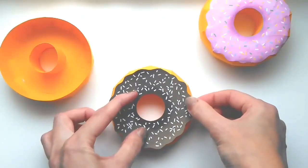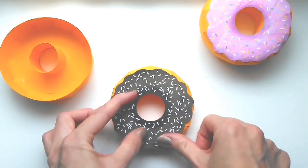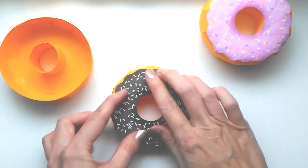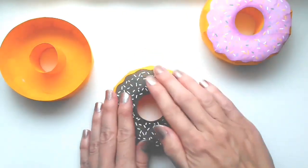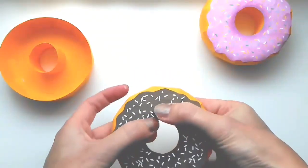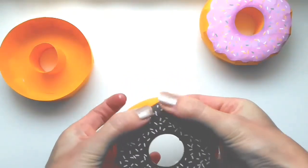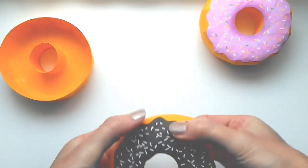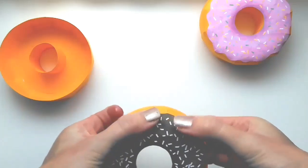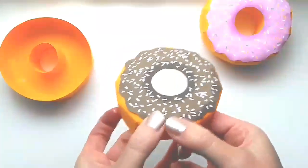Line it up with that center circle. Get all those edges down so it looks like it's all dripping down.